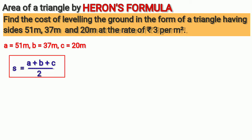Let us substitute values of a, b, c in this formula. We have s = (51 + 37 + 20) / 2. If we add all these numbers, we have 108 / 2, and 108 divided by 2 is 54. So semi-perimeter equals 54 meter.